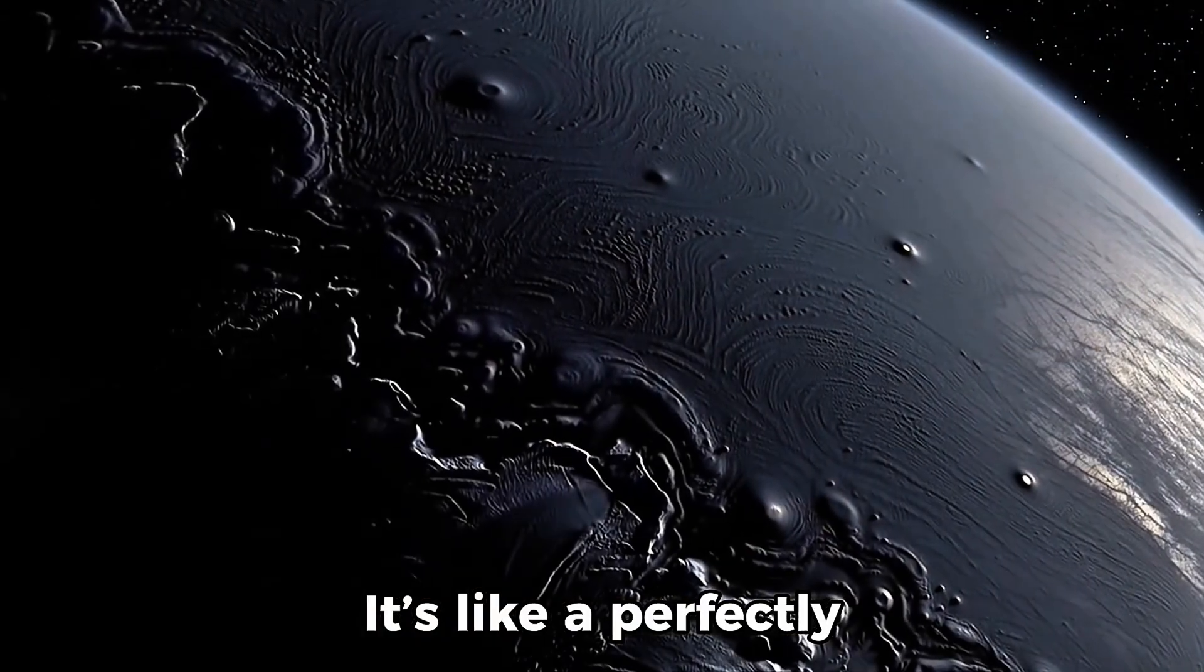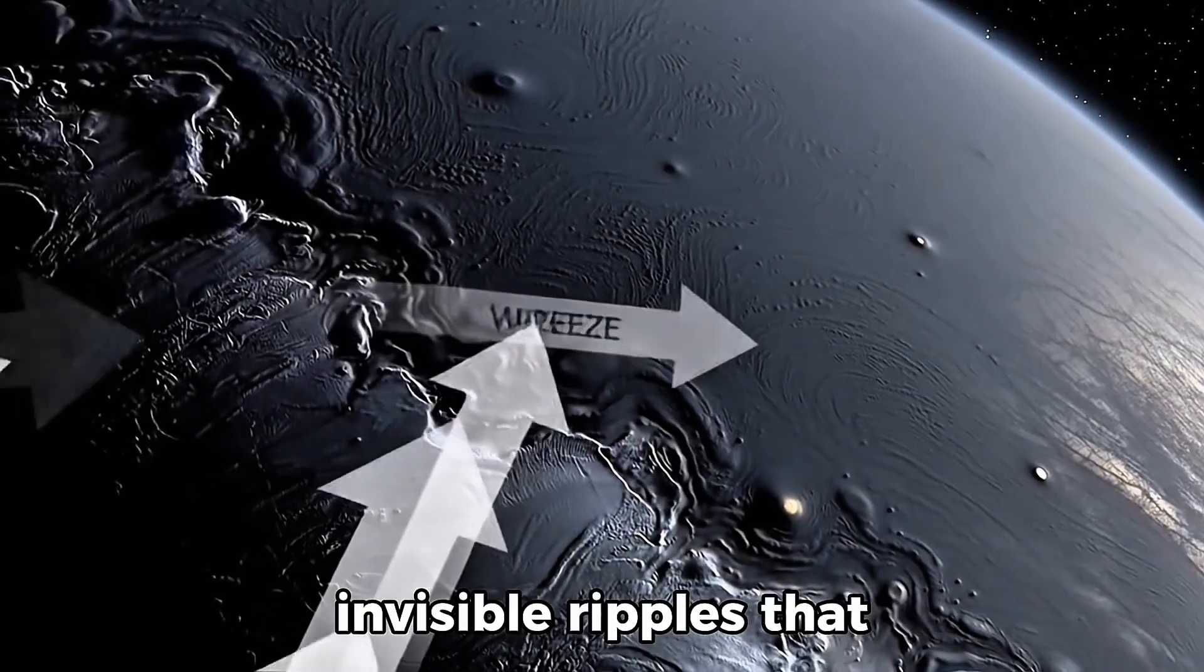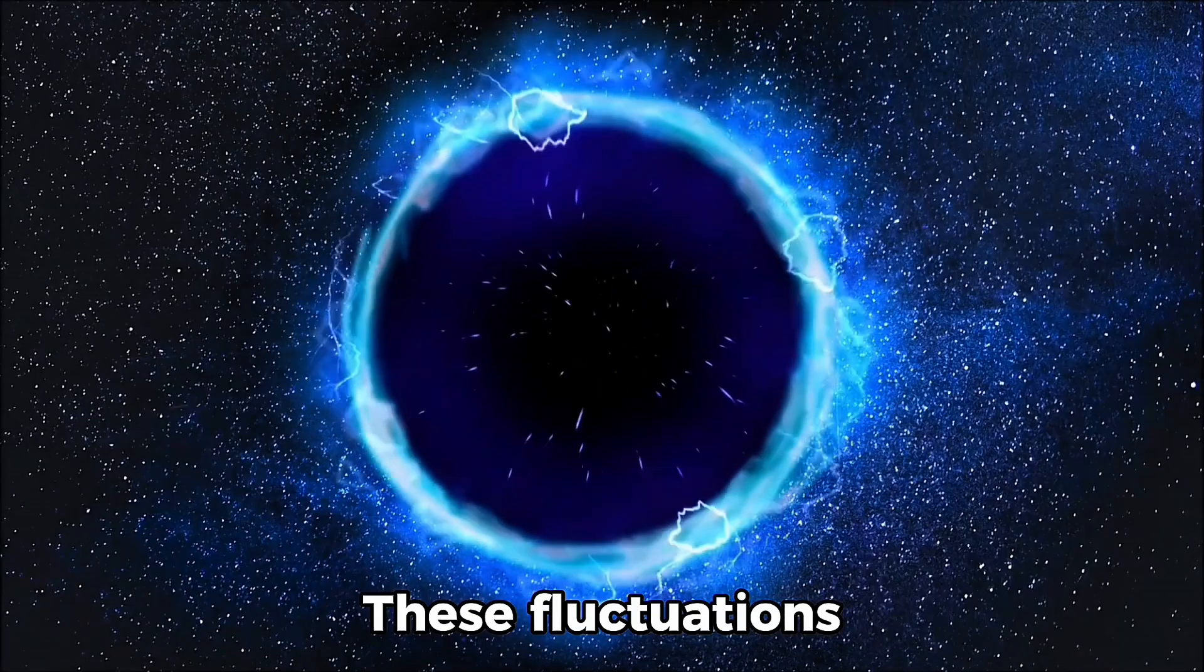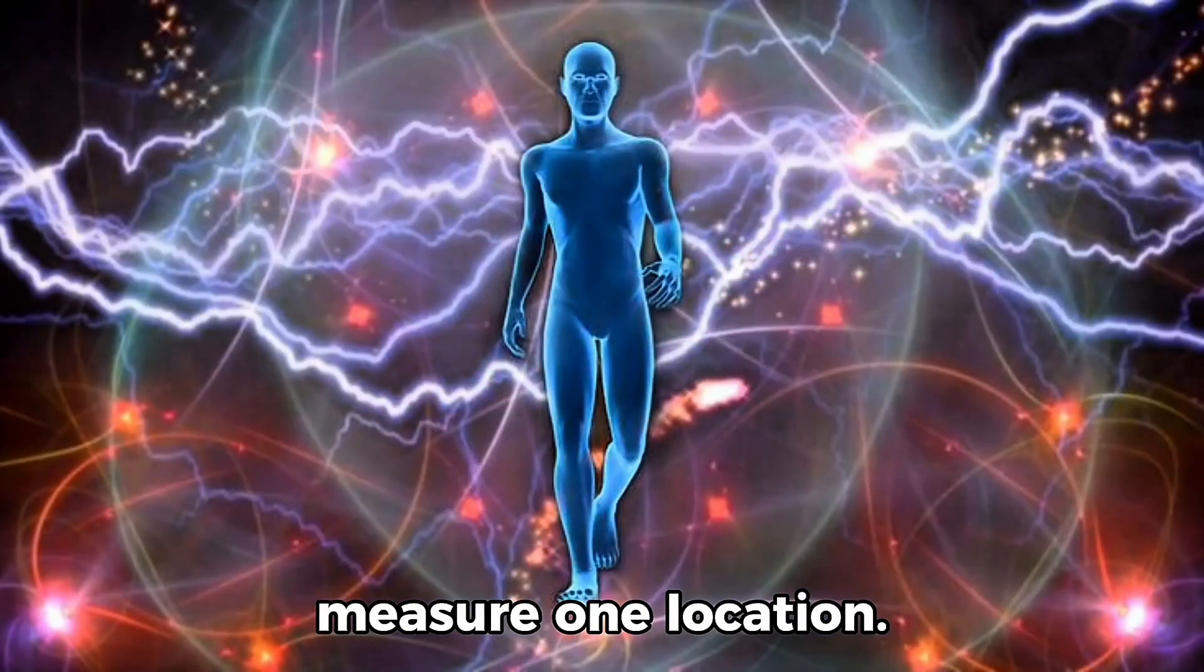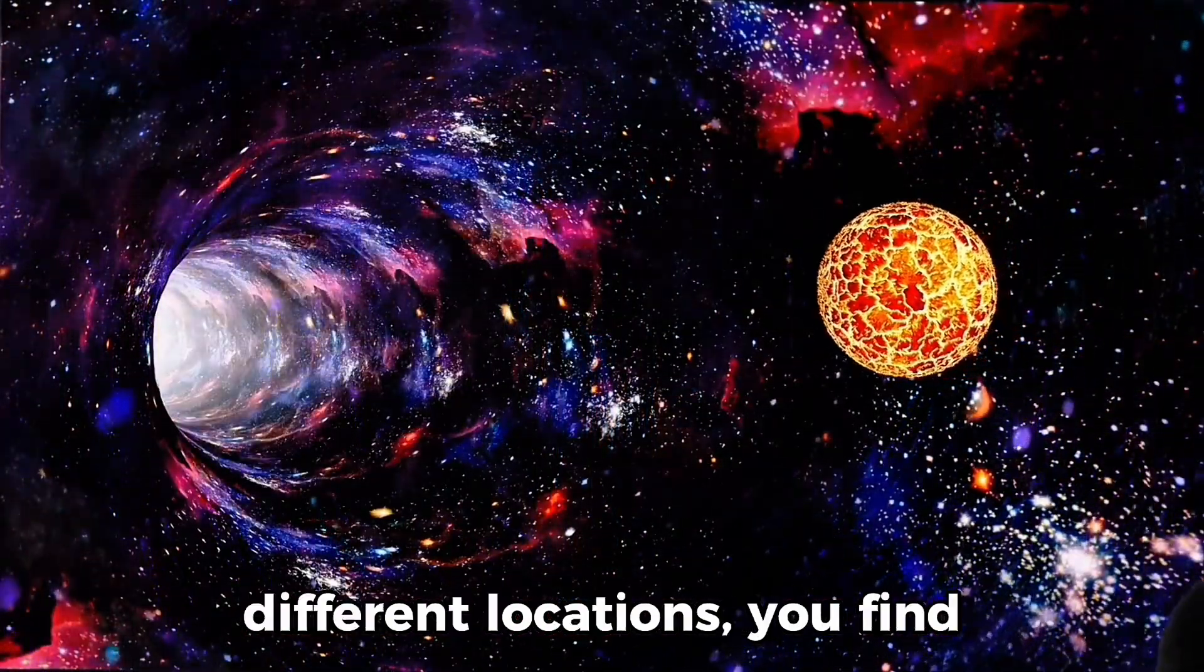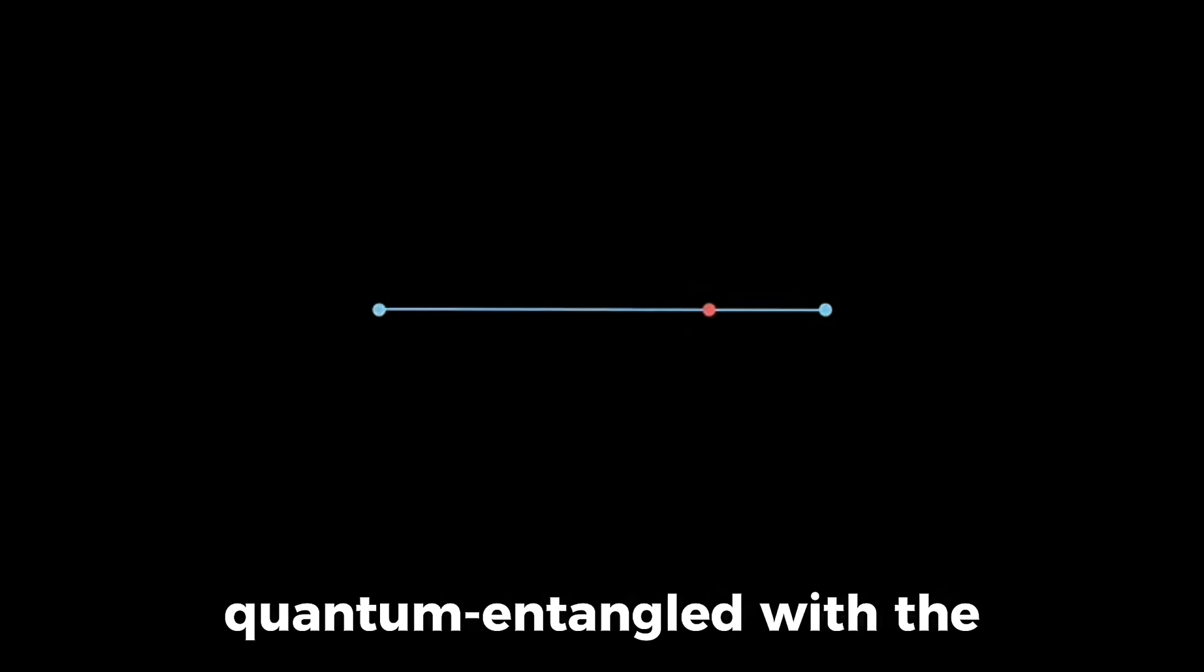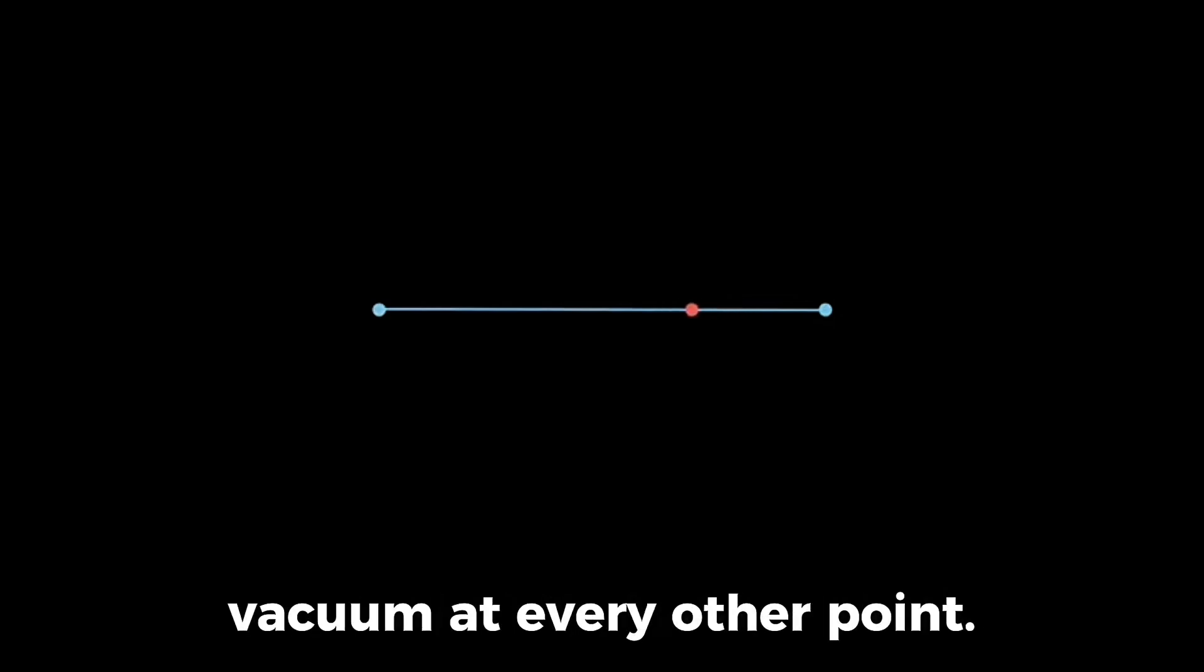It's like a perfectly still pond covered in invisible ripples that momentarily rise and fall. These fluctuations appear random if you measure one location. But when you measure two different locations, you find that they're correlated.